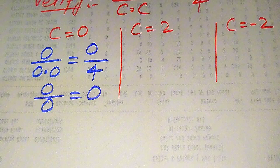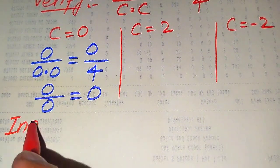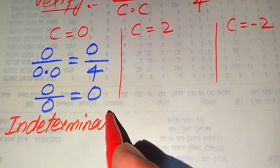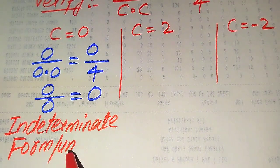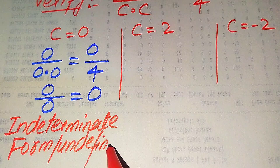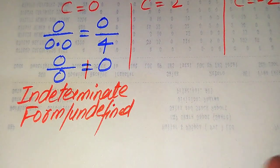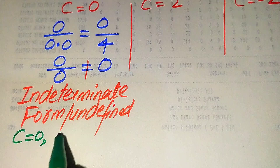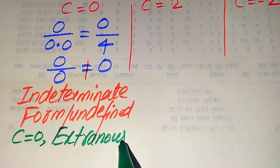Remember that 0 over 0 is called the indeterminate form — in other words, it is undefined. If this is undefined, both sides are not equal, which means c equals 0 does not satisfy the given equation. Therefore, c equals 0 is an extraneous root of the given equation.